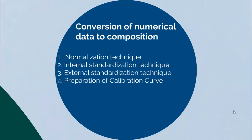Conversion of numerical data to composition: the numerical data obtained in terms of height, area, or weight corresponding to the peak for the reference compound and for the separated compounds must be converted to the concentration of the different compounds in the mixture. The important and commonly used methods to relate the digital data obtained from a chromatogram to the composition of the sample are: normalization technique, internal standardization technique, external standardization technique, and preparation of a calibration curve.